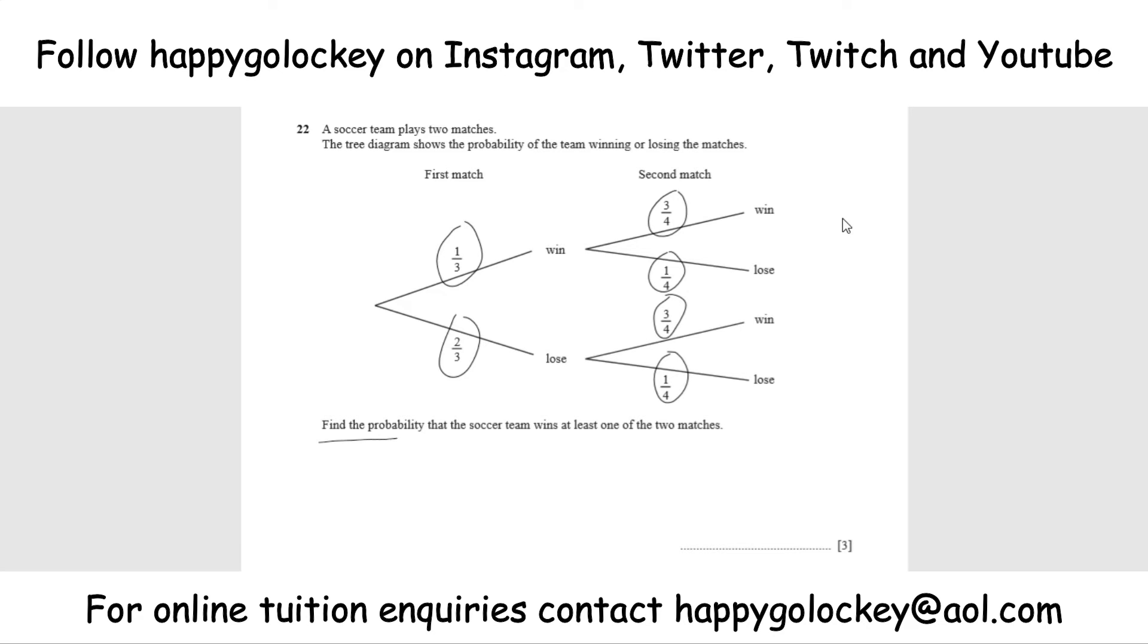The question asks us to find the probability that the soccer team wins at least one of the two matches. So that can be a win of both games, a win and a lose, a lose and a win, but not a lose and a lose. So I think the best way to do this is to just work out this tree, the lose-lose, and take that away from 100%.